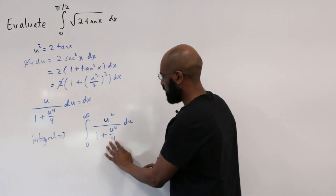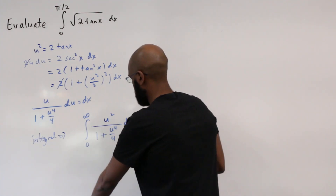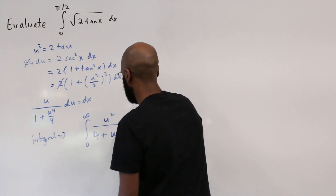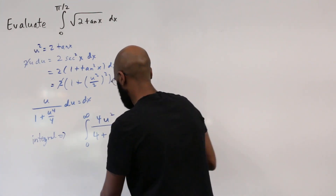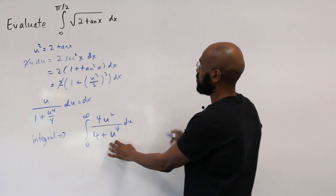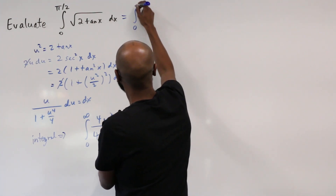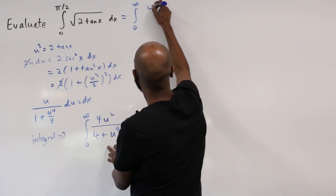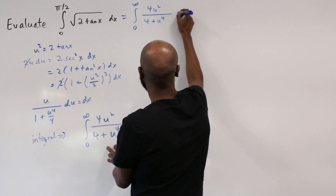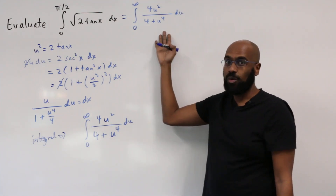Multiplying the two u terms together gives u², and we have u² over (1 + u⁴/4) du. Then multiplying through by 4, we can clear the denominator fraction, giving us the integral from 0 to infinity of 4u²/(4 + u⁴) du. The question is: how do we figure out what this integral is?